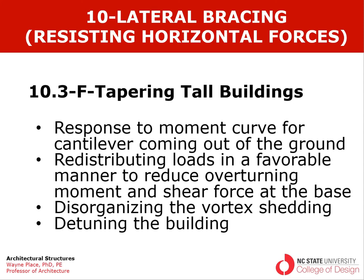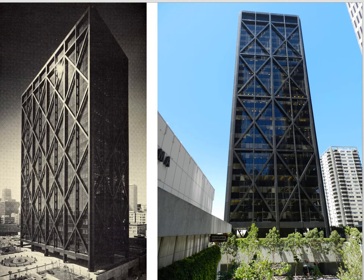Most of our tall buildings are prismatic in cross section. This is an example of a truss tube building, the Alcoa Building in San Francisco. Each floor plate is the same size and shape as the floor plate below, so we imagine this as being extruded up out of the ground with a constant cross section. We call that a prismatic building.